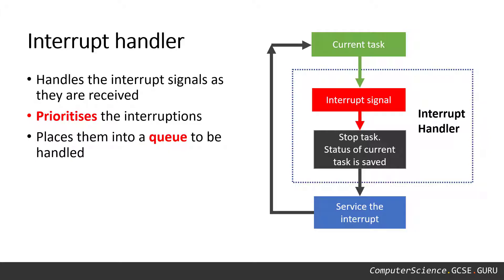It's the job of the interrupt handler within the operating system to handle the interrupts. The interrupt handler will prioritize the interruptions and place them in a queue ready to be handled. If we look at the diagram, we can see how this happens. We have our current task and then we receive an interrupt signal. It's now that the interrupt handler takes over, stops the task that you're doing, and makes a note of the current status of that task.